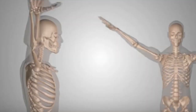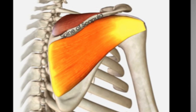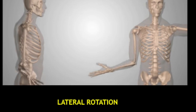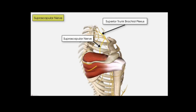The main action of the supraspinatus in isolation is abduction. The main action of the infraspinatus is lateral rotation. It has to be remembered that both supraspinatus and infraspinatus have a common nerve supply — the suprascapular nerve, originating from the superior trunk of the brachial plexus. If there is an injury to the suprascapular nerve, we will find denervation edema only in these two rotator cuff muscles, giving us an idea as to which nerve issue we need to look into.